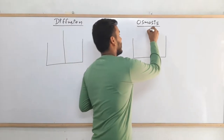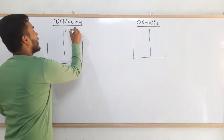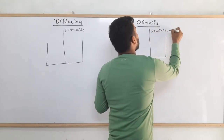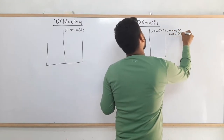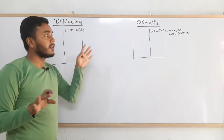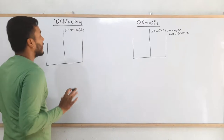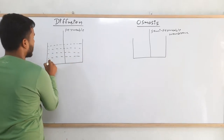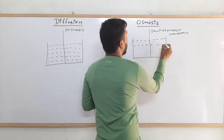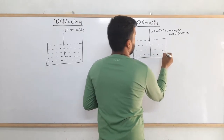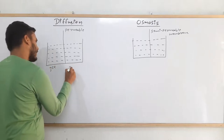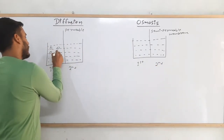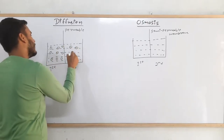Let us consider they are separated by some barrier. In case of diffusion, let's consider this is a permeable membrane. And on the osmosis side, this is a semi-permeable membrane. In both sides there is the same liquid but at different concentrations — this is the first solution and this is the second solution. Suppose in the first solution the amount of solute is more than that in the second solution.